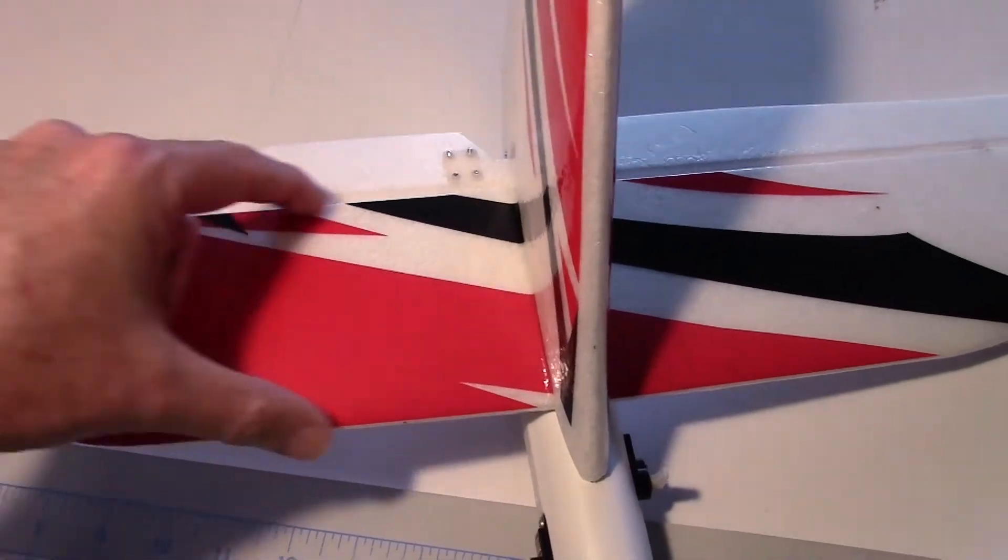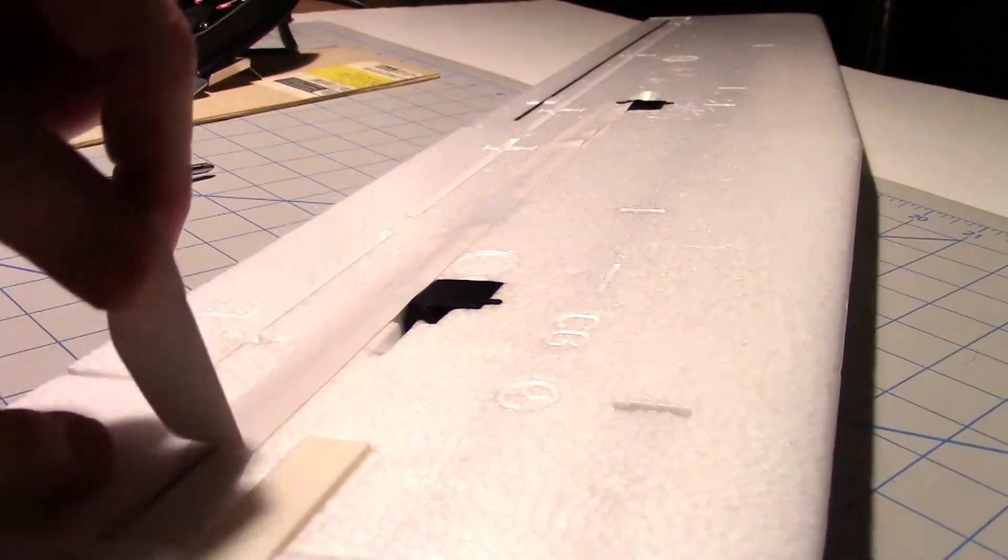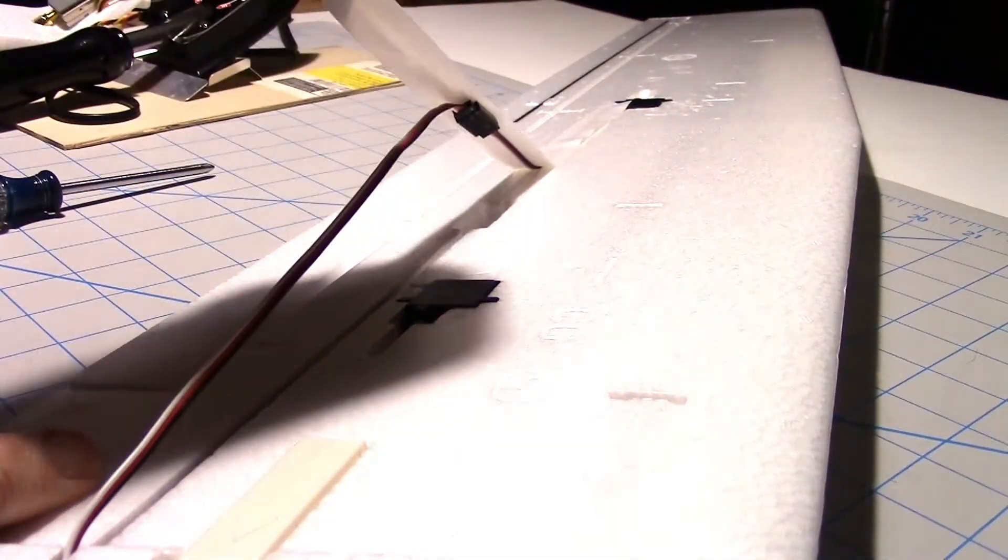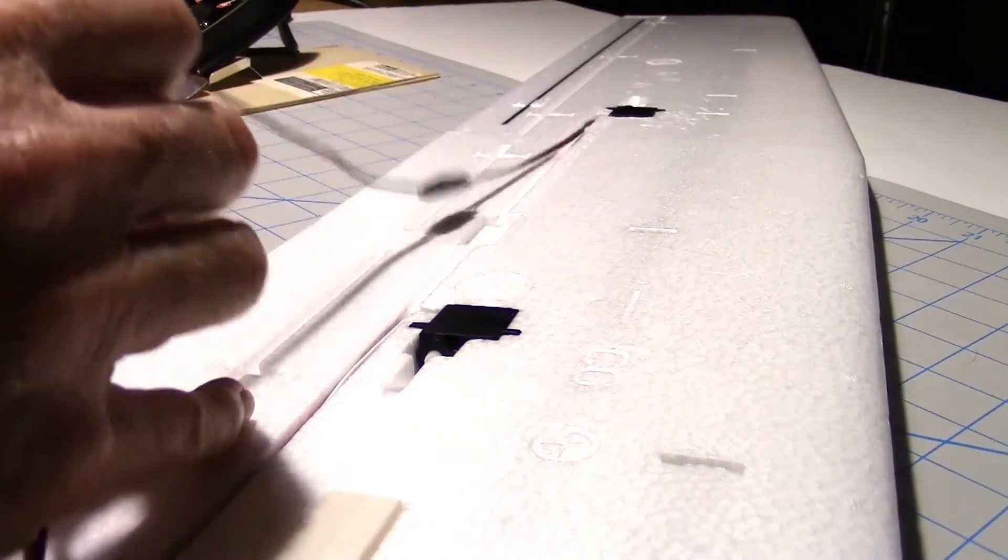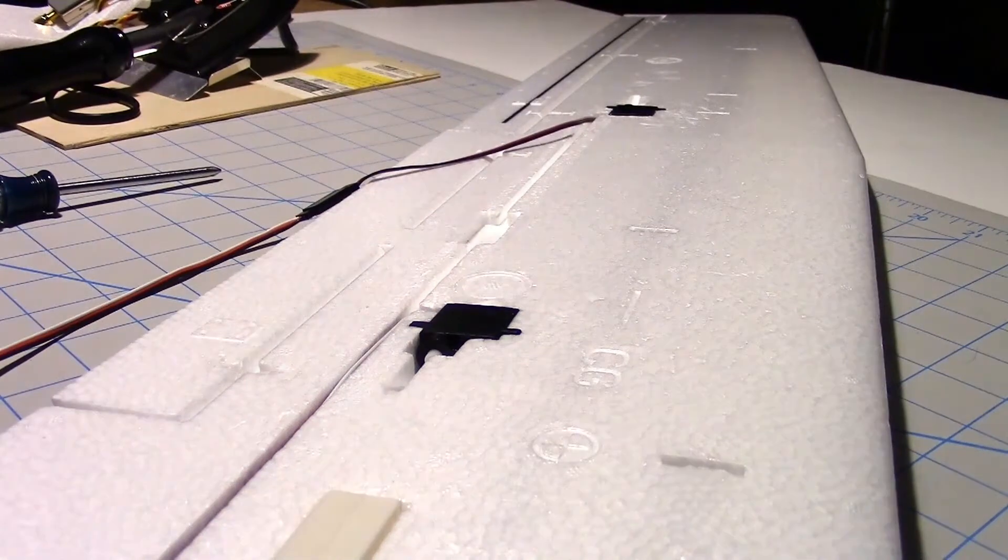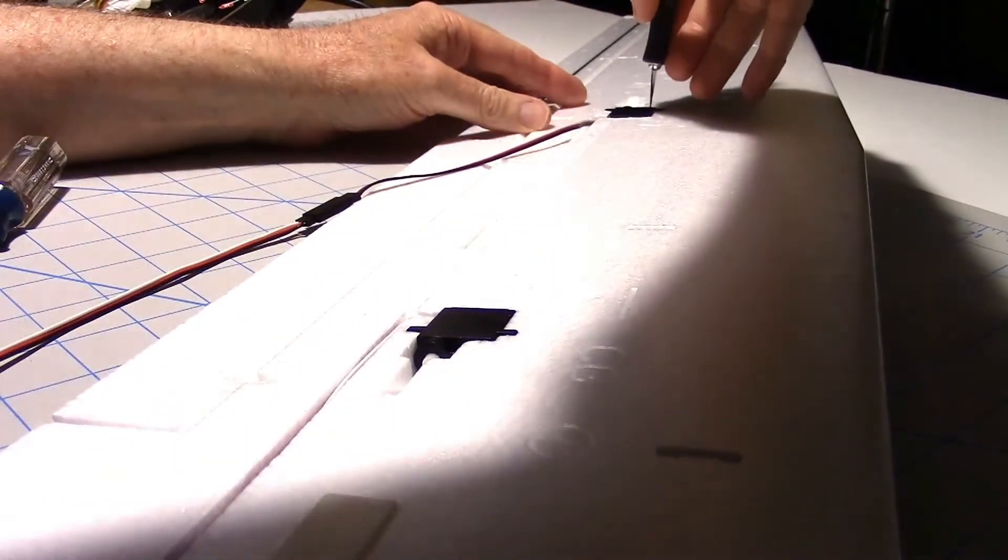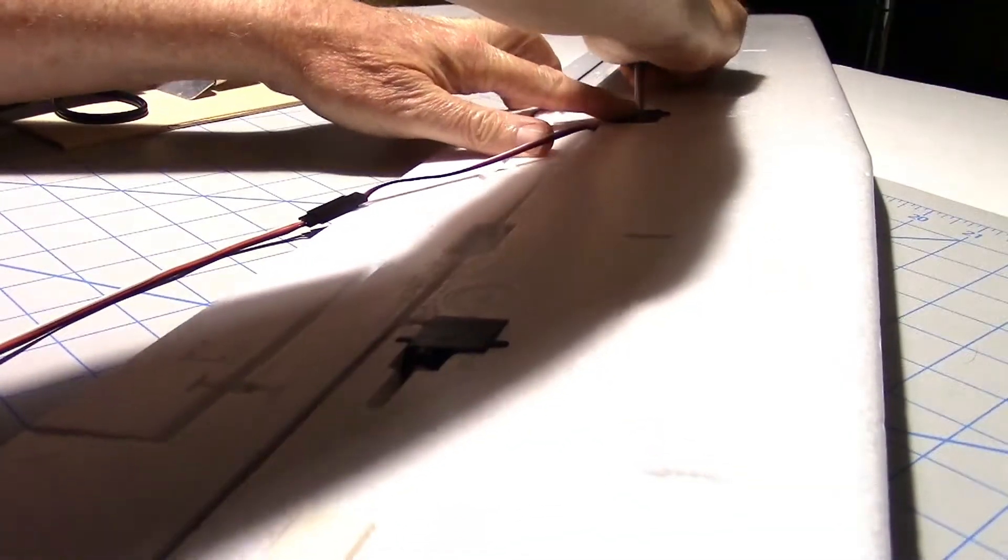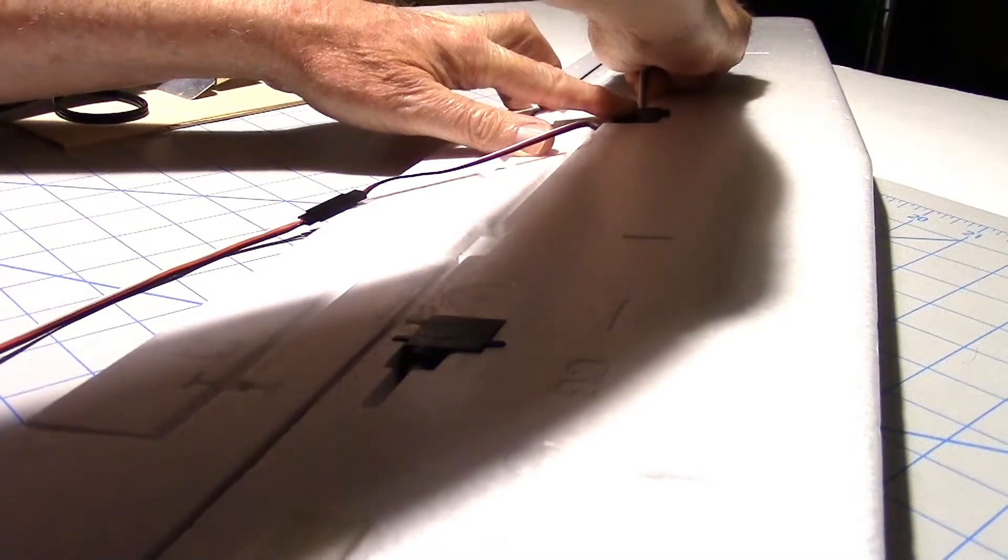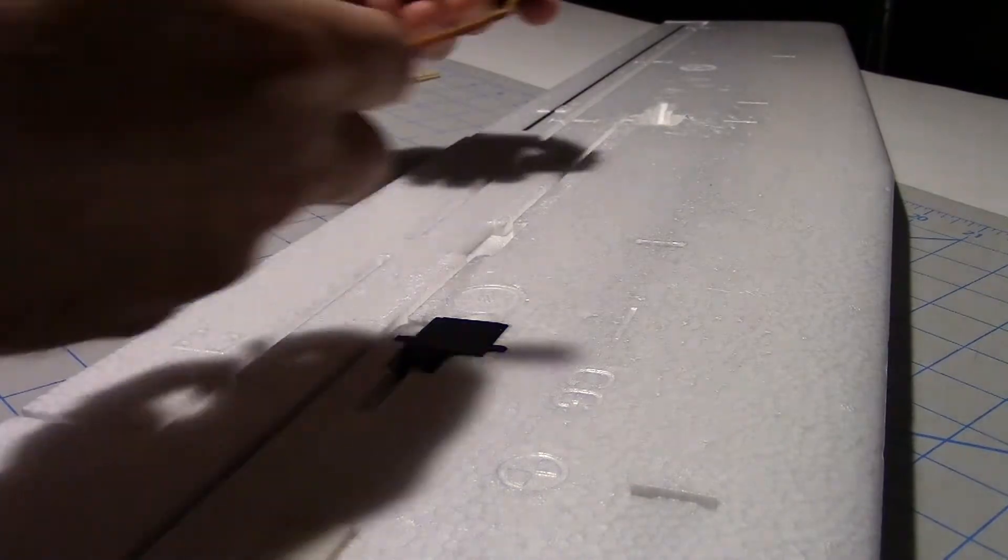Next I'm going to replace the aileron servos and then laminate the wings. Just a little piece of tape holding the wire down. I'm just going to cut around the servo with a knife and then pry it up with a screwdriver and replace it with the new one.